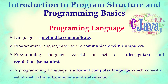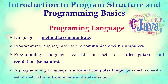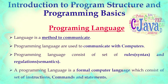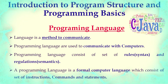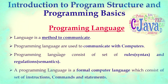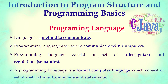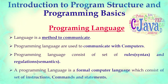Moving on to programming language — what is a language and why do we need a programming language? A language is used to communicate with each other; it's a tool or powerful medium for communication. In order to communicate with a computer, we use one of the existing computer languages. A programming language consists of a set of rules, syntax, regulations, and semantics. It is a formal computer language consisting of instructions, commands, and statements.